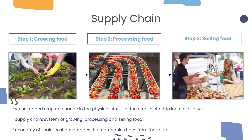One important thing to note is that when companies own various aspects of the supply chain, their overall cost goes down. They do not need to pay as much to move agriculture products from one step to another, meaning there is an easier transition, resulting in lower costs and increased profits. A vocab term relevant to this concept is economy of scale, which refers to the cost advantages that companies have from their size.